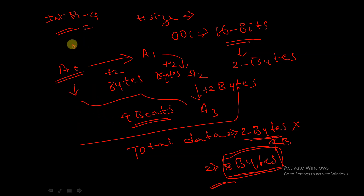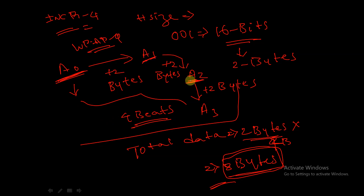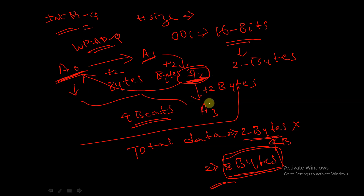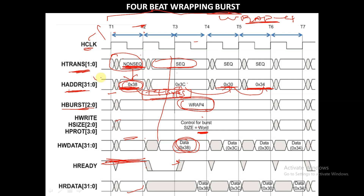Similarly, in the case of WRAP4, the initial address will be a0, next plus 2 bytes gives a1, next plus 2 bytes gives a2. If a2 is the wrapping boundary, then it will come back to a0 — it will not go to a3. Let us consider this 4-beat wrapping burst.